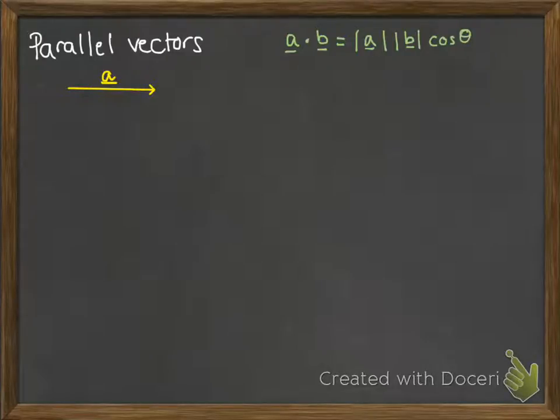So if we have vector A and vector B that's parallel to it and in the same direction, the angle between them is 0.